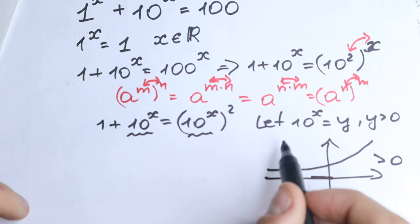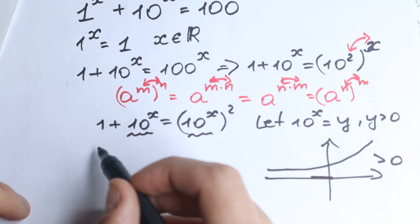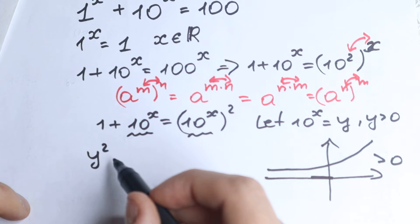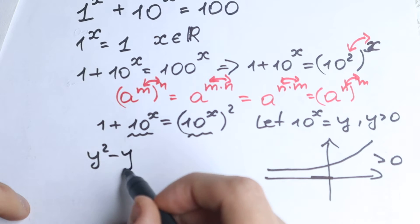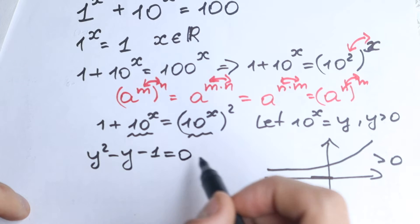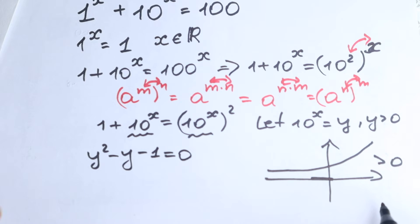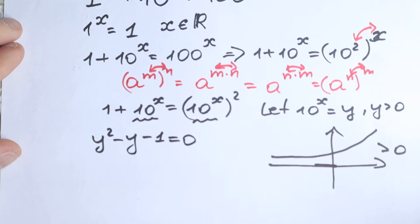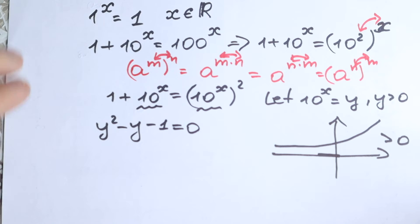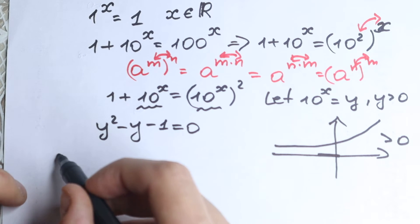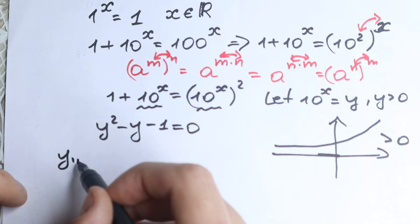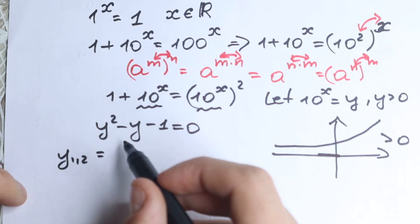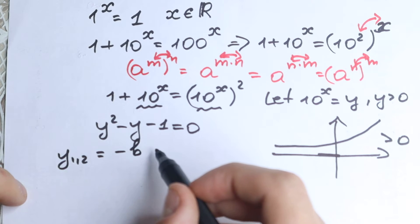After substitution, we have y squared minus y minus 1 equals 0. As you can see, we have a classic quadratic equation, which can easily be solved. So y₁ and y₂ equal to minus b plus or minus square root of b squared minus 4ac, over 2a. I'll write the quadratic formula here since many school students watch my videos.